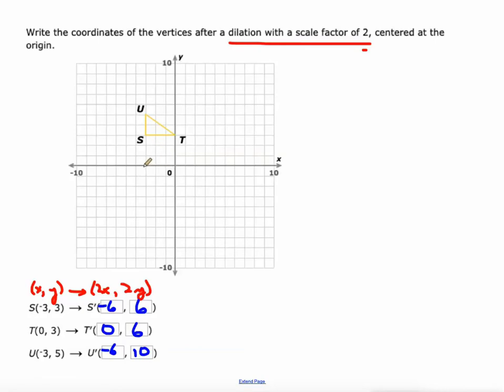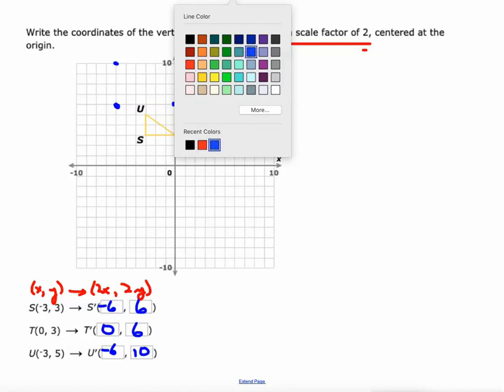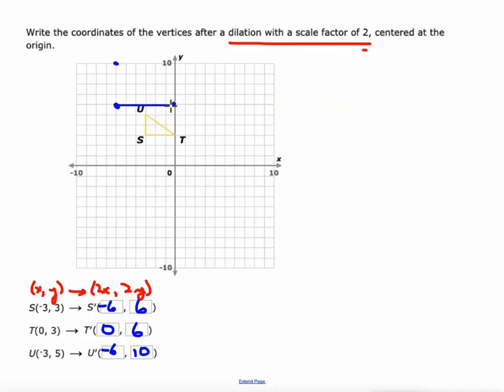Negative 6, positive 6, 0, 6, and negative 6, 10. So there's our new image.